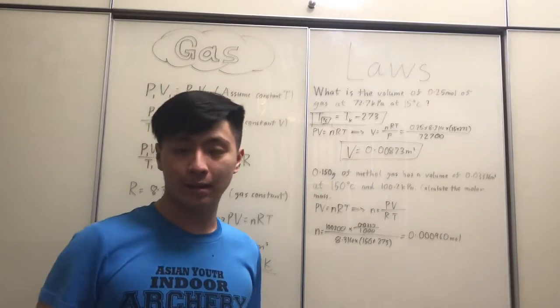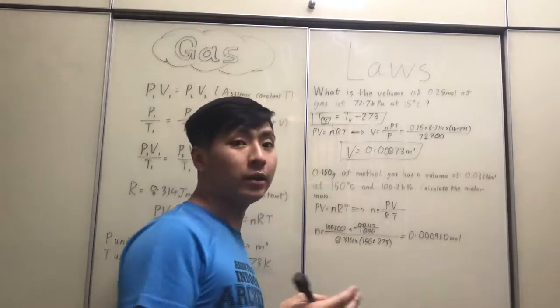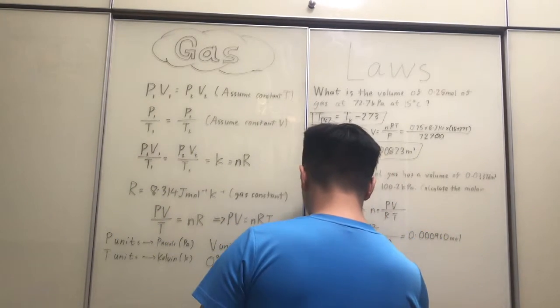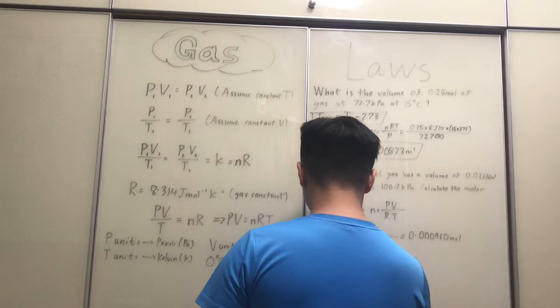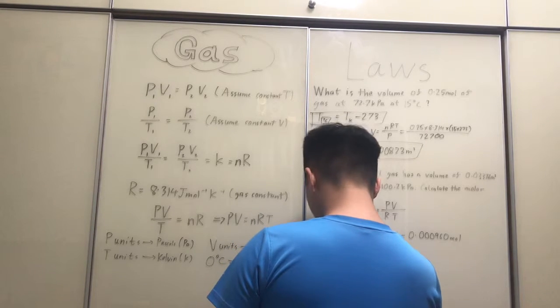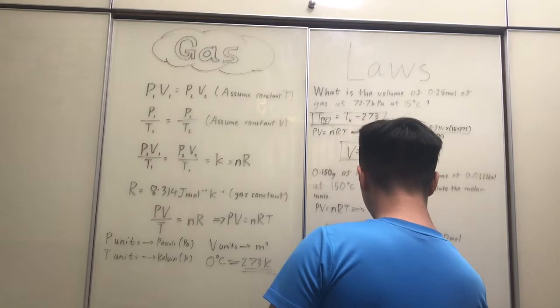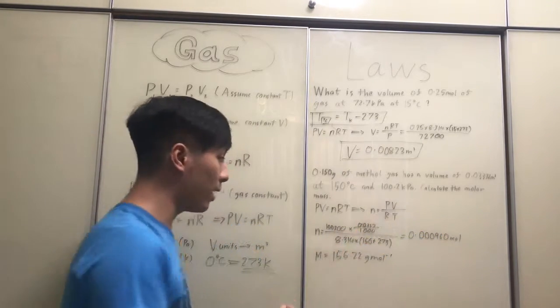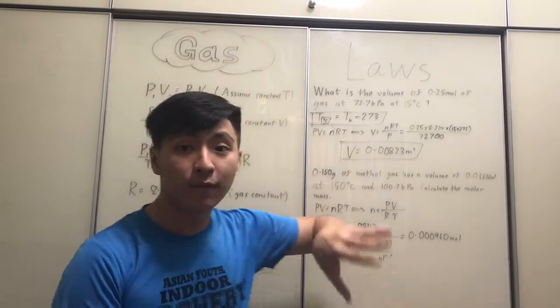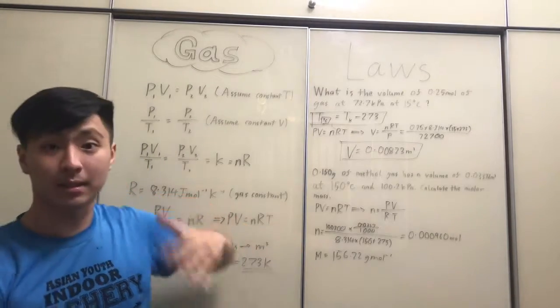Now, in order to calculate the molar mass, if you recall from our previous lectures, then you would know how to do it. And actually, I'm just not going to explain it. I'm just going to write out the value of the molar mass straight ahead. So, the value of the molar mass is 156.22 grams per mole. So, you see how we're able to take PV equals NRT and calculate different variables in order to further determine like the molar mass in this case.